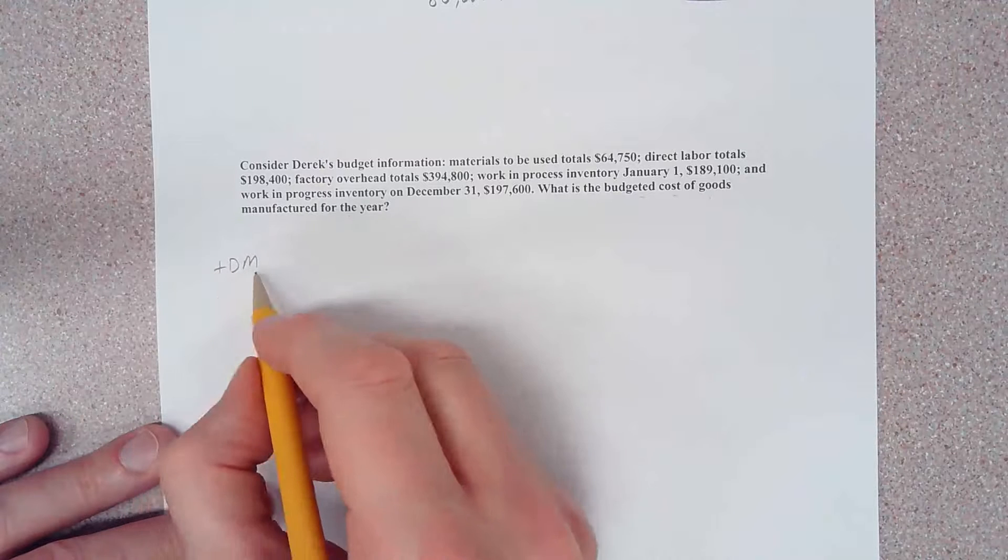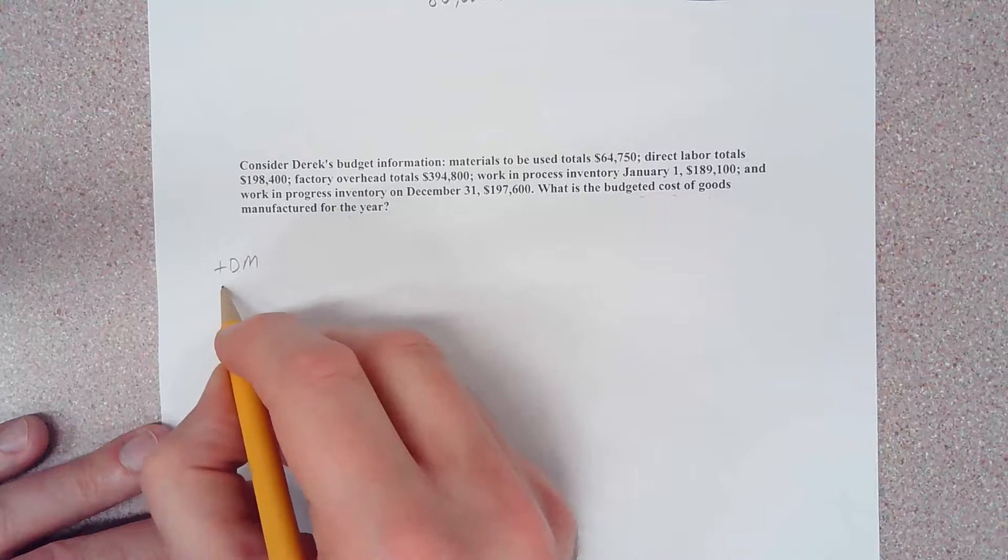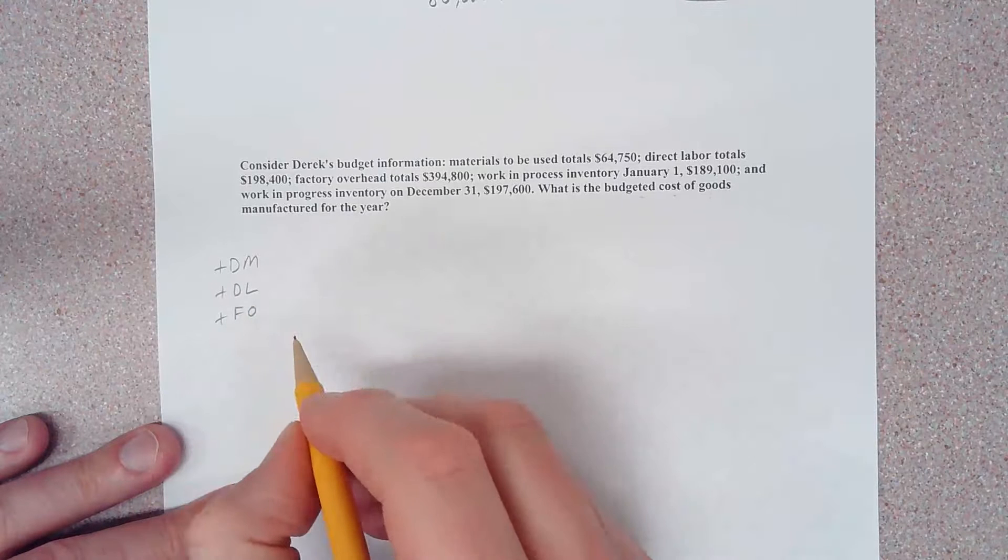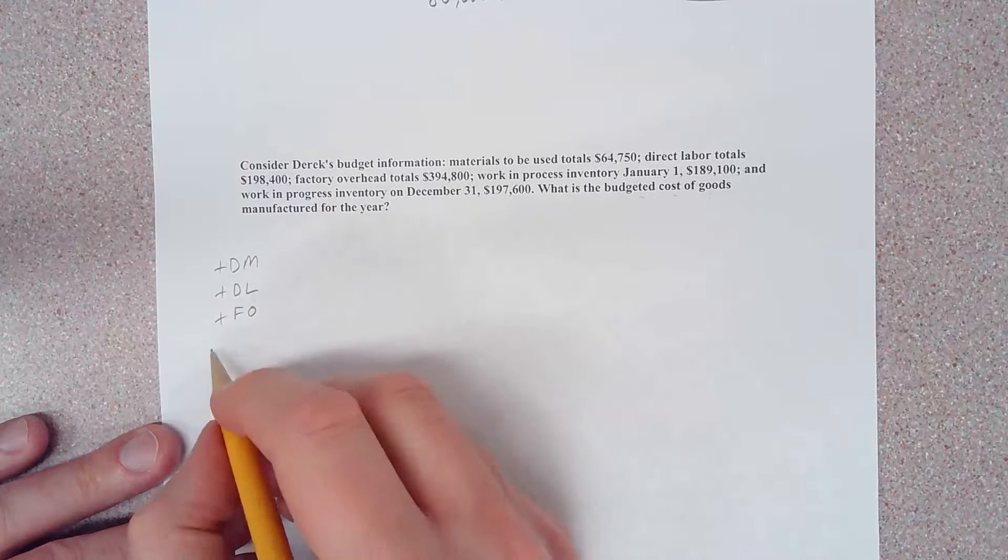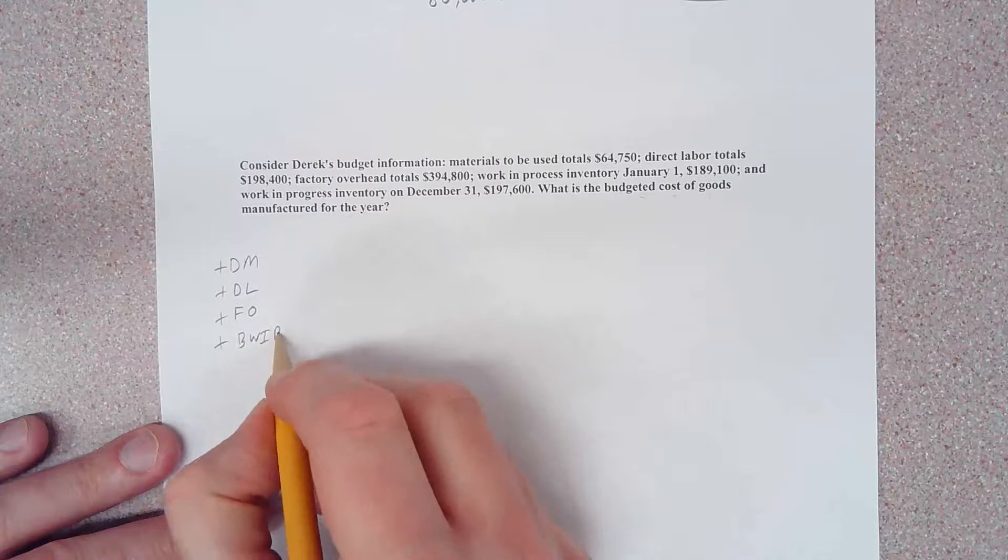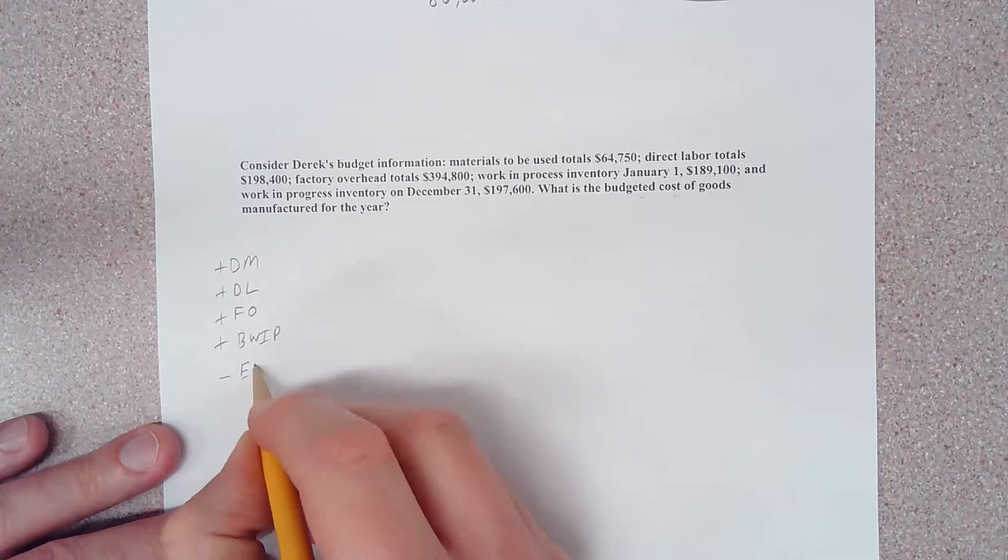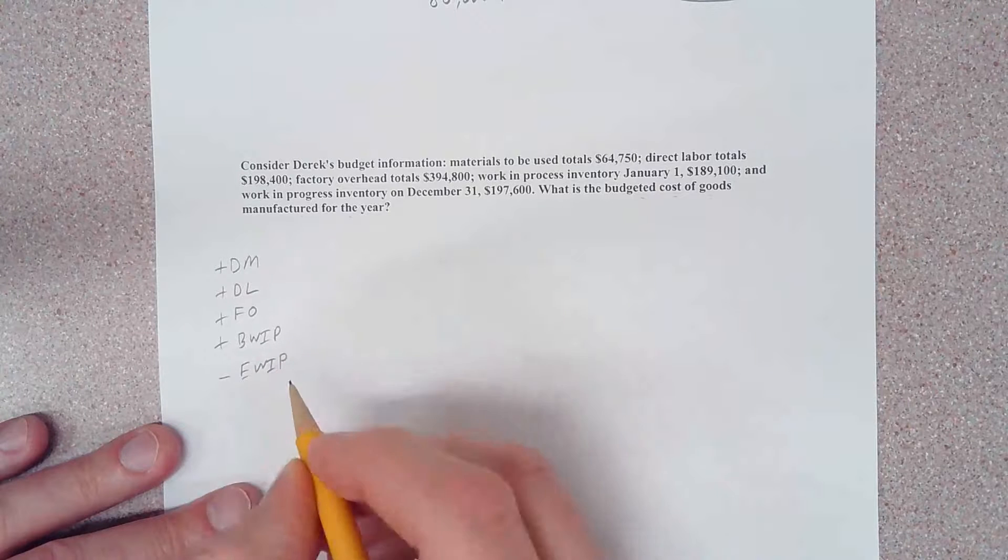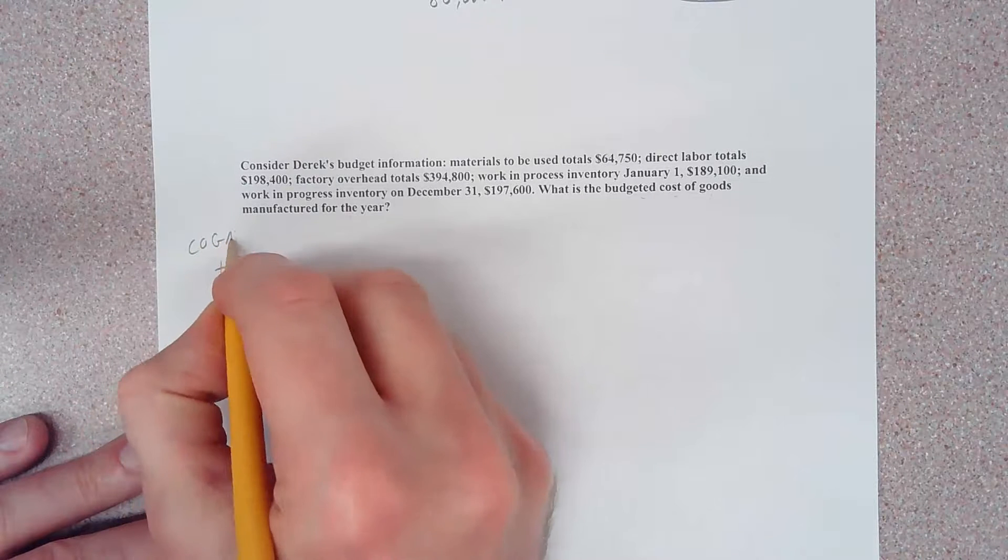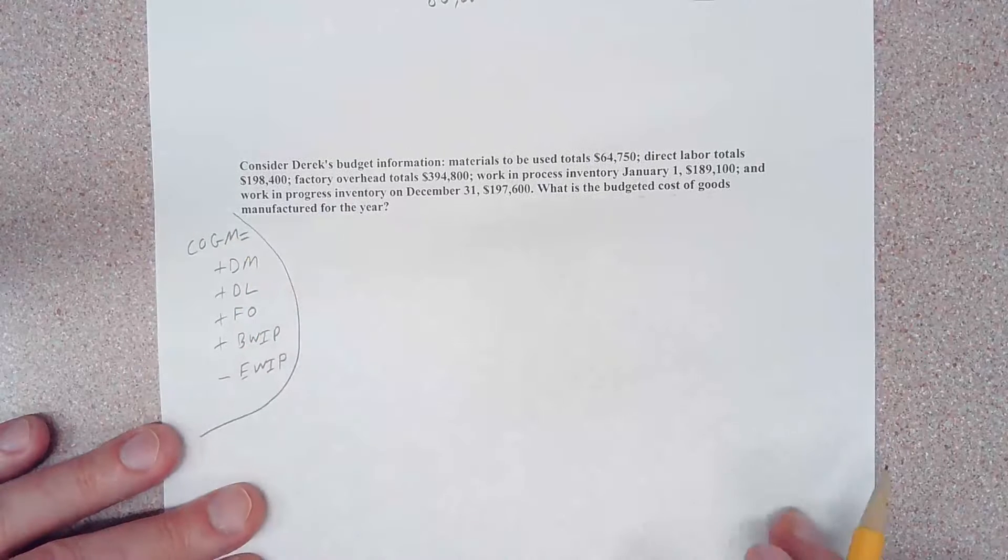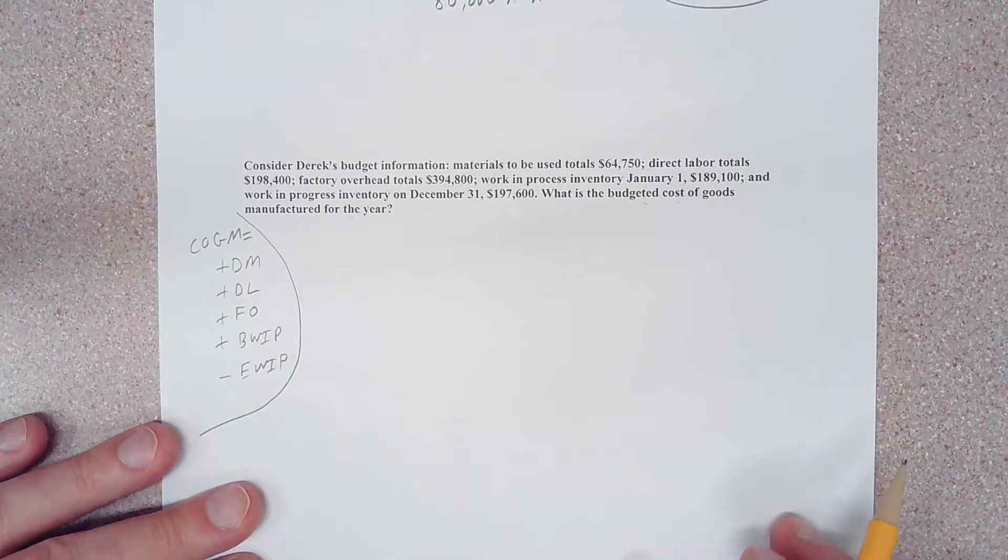We're going to add direct materials, add direct labor, add factory overhead, add beginning work in process, and subtract out ending work in process. So cost of goods manufactured equals... we'll just kind of separate that over here. Alright.